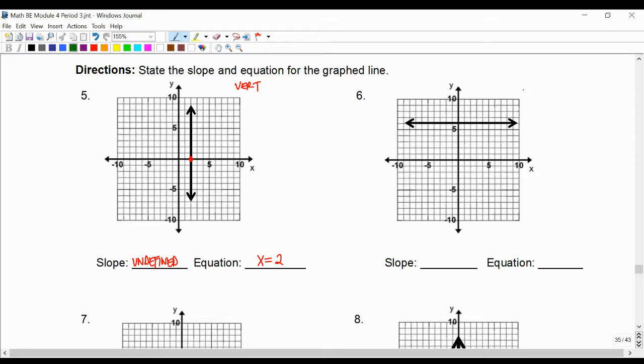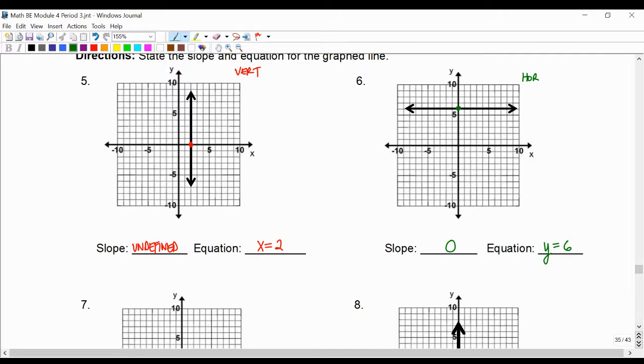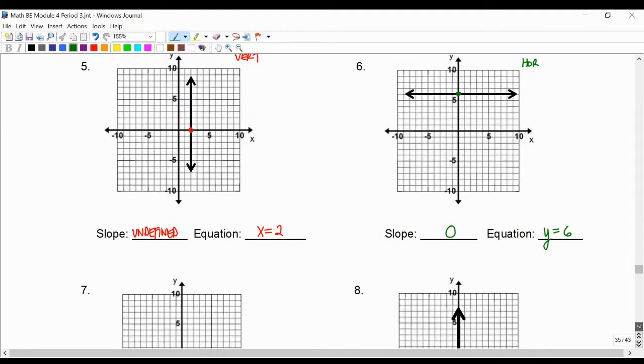Next one is horizontal. That means that the slope is zero, and the equation is y equals six. Again, backwards, it's y equals six, even though the y-axis is vertical.